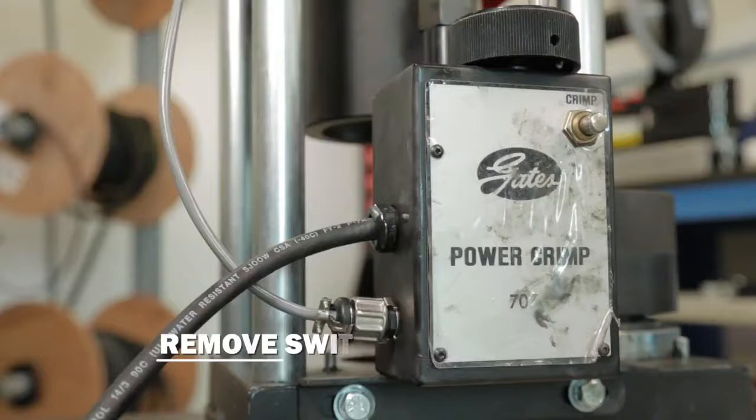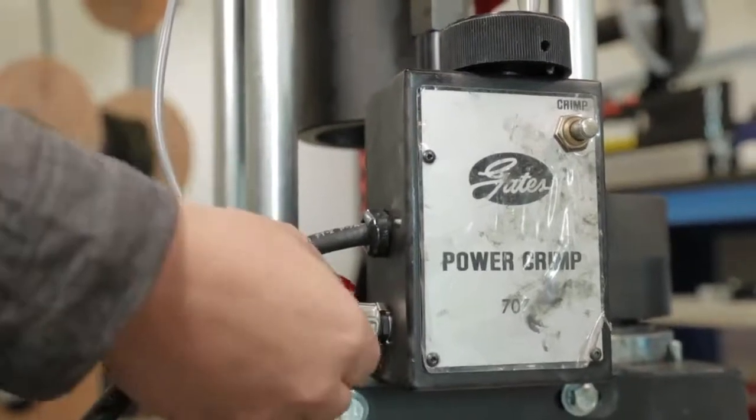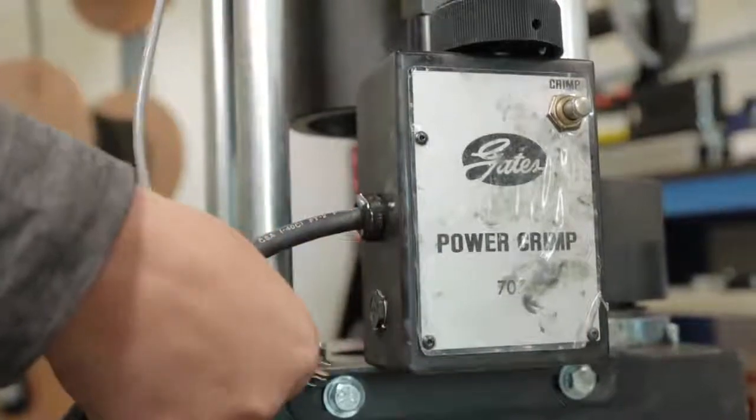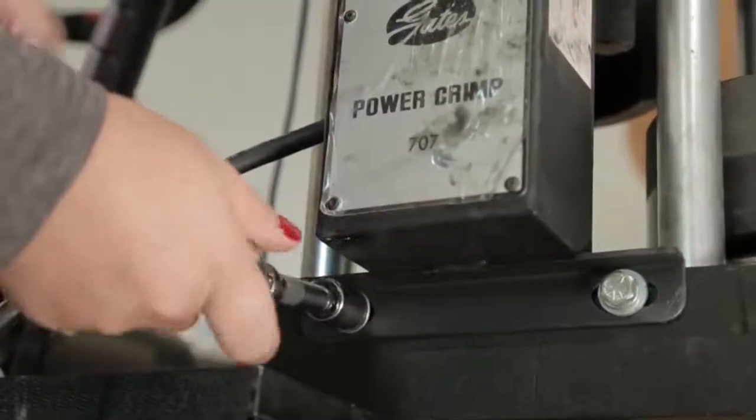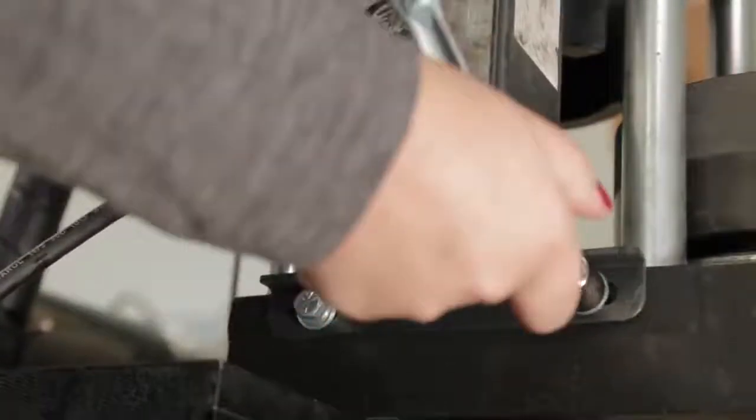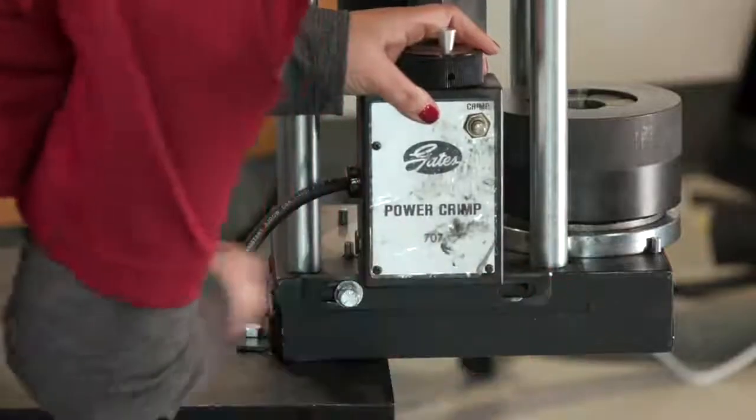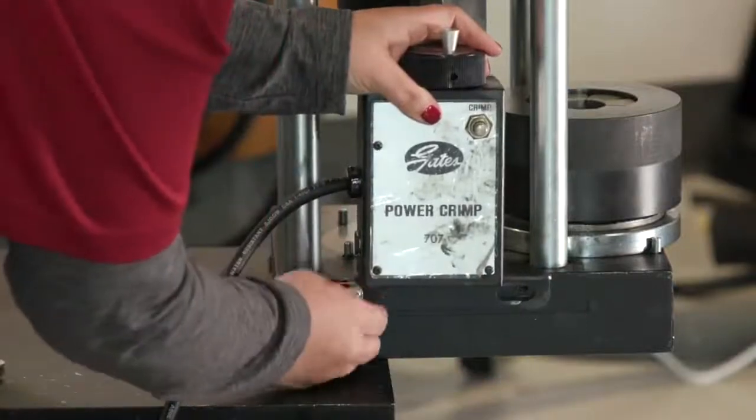Next, you're going to remove the switch box. First, disconnect the gray cable by gently twisting the connector counterclockwise. Then remove the two bolts holding it to the base plate of the crimper. Depending on your PC-707 model, this may be located on the top or side of the base plate.